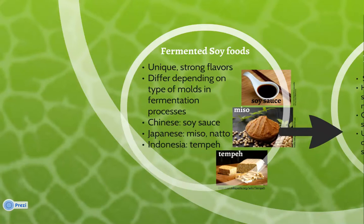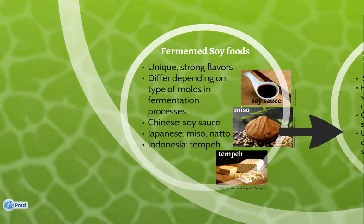Japanese miso is made from the fermentation of soybeans with rice and barley, and it is used as a spread in different dishes. Natto is another Japanese invention, and it is named after the bacteria of the rice straw added to the soybeans, Bacillus natto. Tempeh is a traditional soy food from Indonesia. In order to make tempeh, the outer coats of seeds must be removed, and the seeds are then cooked and fermented. Fried tempeh is often used as a meat substitute.